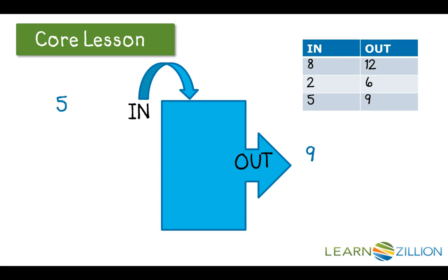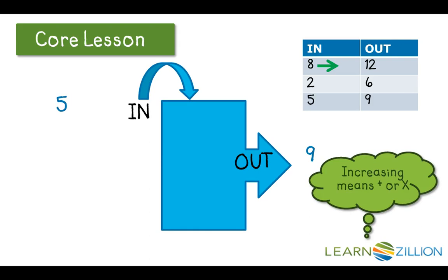So now we need to think about this and look at the relationship. What's happening to our 8 to 12? Is it getting bigger or smaller? Looks like 8 is getting larger. So now we're going to think what happens to a number to increase it. We can add or we can multiply. Is there anything we can multiply 8 by to get to 12? What about adding? What can we add to 8 to get to 12? I know 8 and 4 is 12.